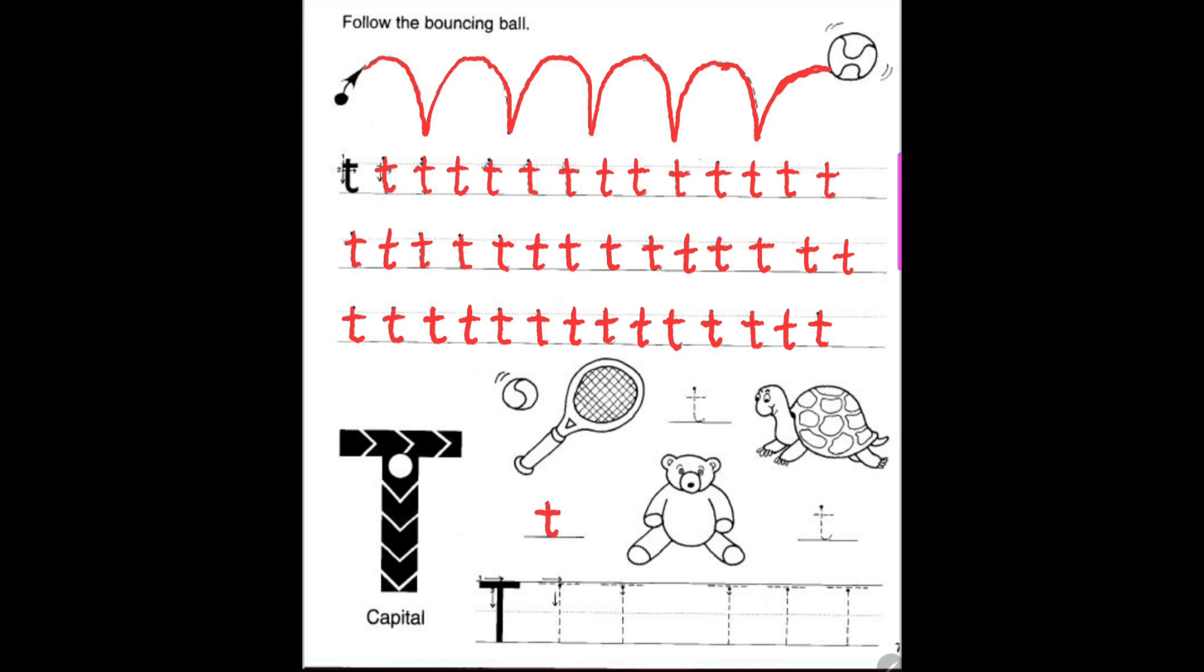So we have tennis racket. We have T, T, teddy bear. Teddy bear. And T, T, turtle. Turtle.